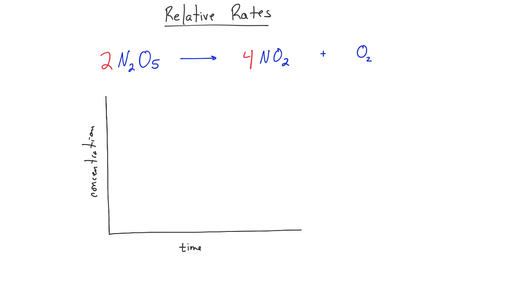As N2O5 is used up, that means it's going to have a negative slope. So we'll draw a line like this.